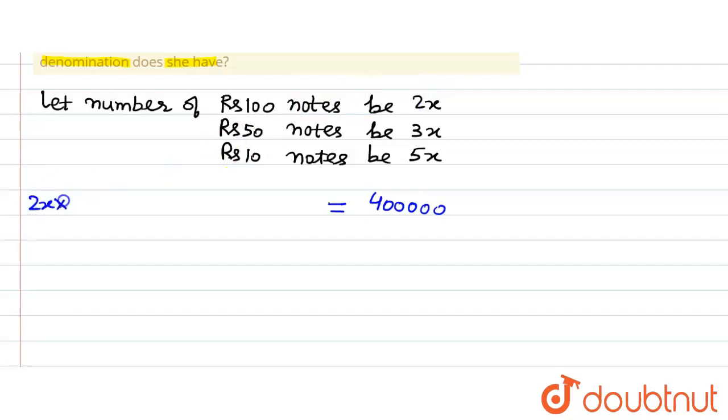total amount or total value that rupees 100 notes contribute is 2x into 100 plus total amount contributed by rupees 50 notes is 3x into 50 plus total amount contributed by rupees 10 is equal to 5x which is number of rupees 10 notes into 10.